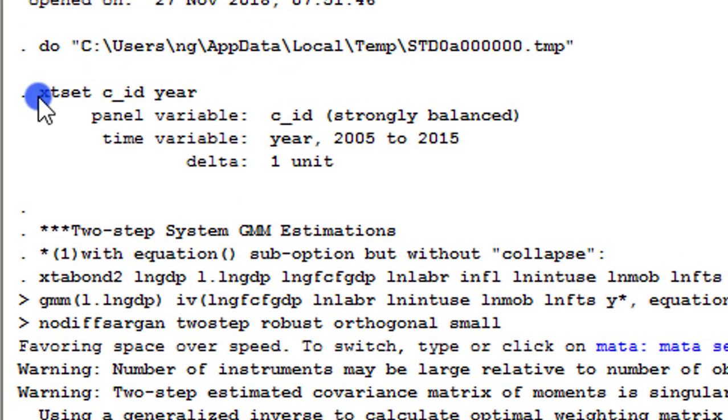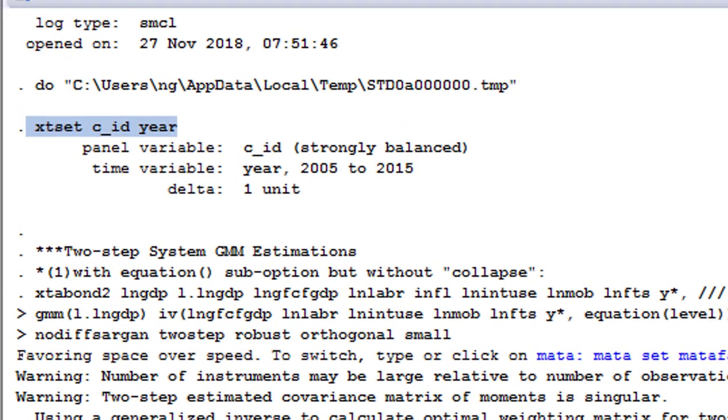First thing first, it is always good for you to set up Stata to run your panel data analysis by executing the xtset cid year command, or depending on how you're able to code your own data. So make sure you run the xtset command. If not, Stata will not run your panel data estimations.